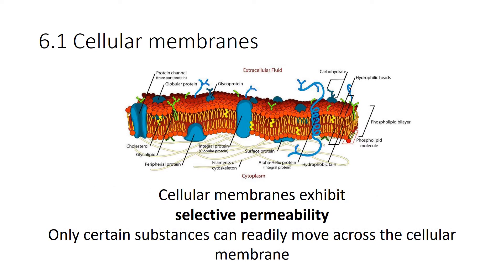Cellular membranes have something called selective permeability. Only certain substances can readily move across the cellular membrane, and this has to do with its form. Small molecules like carbon dioxide and free oxygen can easily move across the cellular membrane because they're small and hydrophobic, so they easily go through that hydrophobic interior. Water can still go through it — even though water is a polar molecule, it can cross the membrane because it's a small molecule. However, if it was much larger it wouldn't go as fast, and it still doesn't move through the membrane quite as quickly as carbon dioxide or free oxygen.